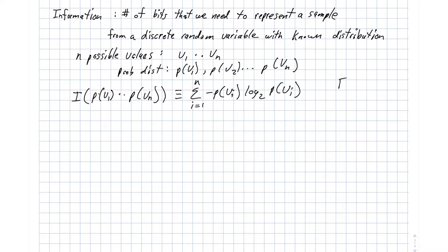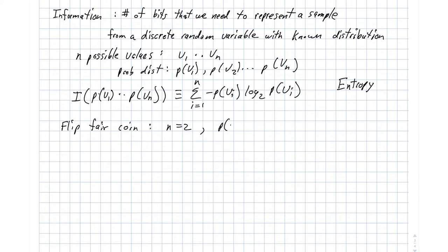As we've said, this is also called entropy, from the physics domain. Let's do a quick example: imagine flipping a fair coin. Then we have n equals 2, and our two probabilities p(v₁) and p(v₂) are both equal to 0.5.